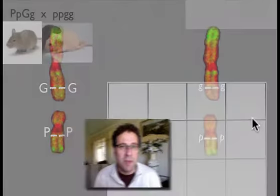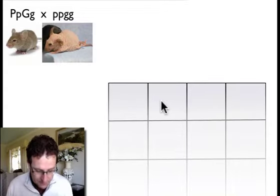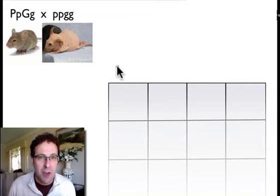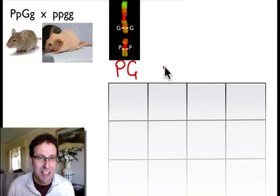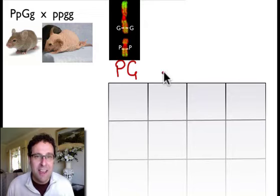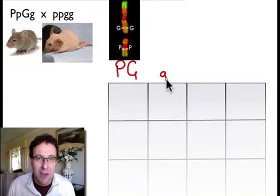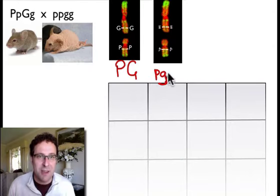We end up with four gametes altogether: two are going to have a big G and a big P, and two will have a little G and a little P. Both dominant alleles are in half the sperm, and the alleles for the recessive traits are in the other half of the sperm.